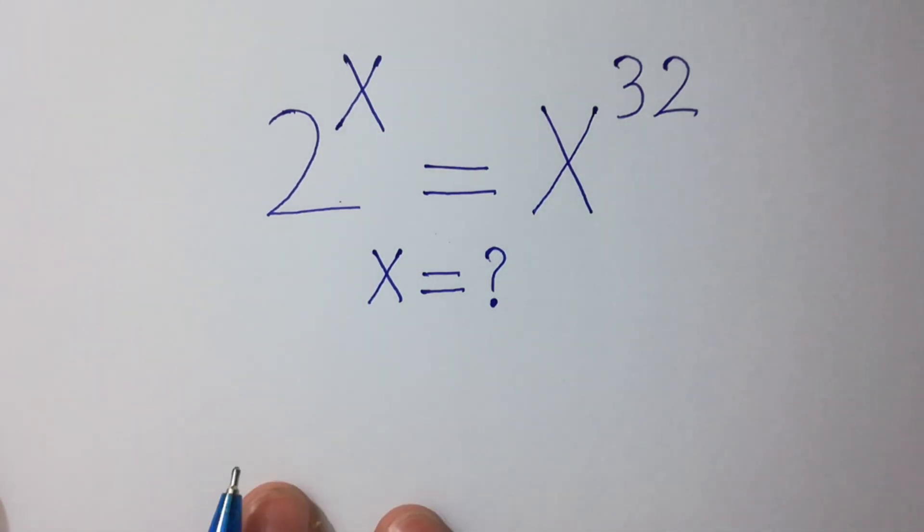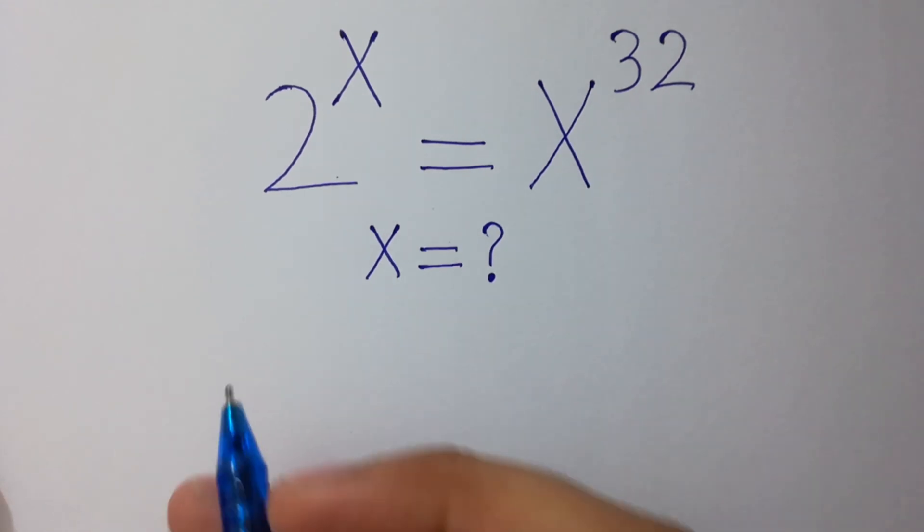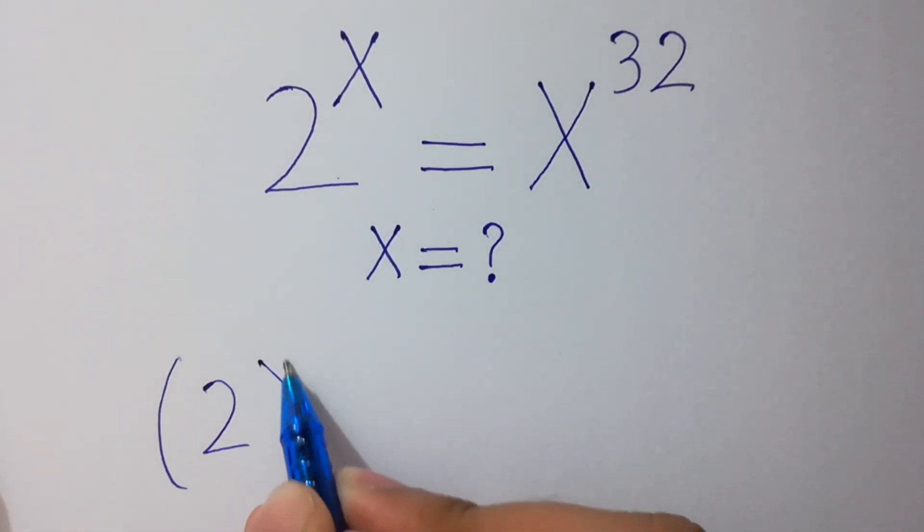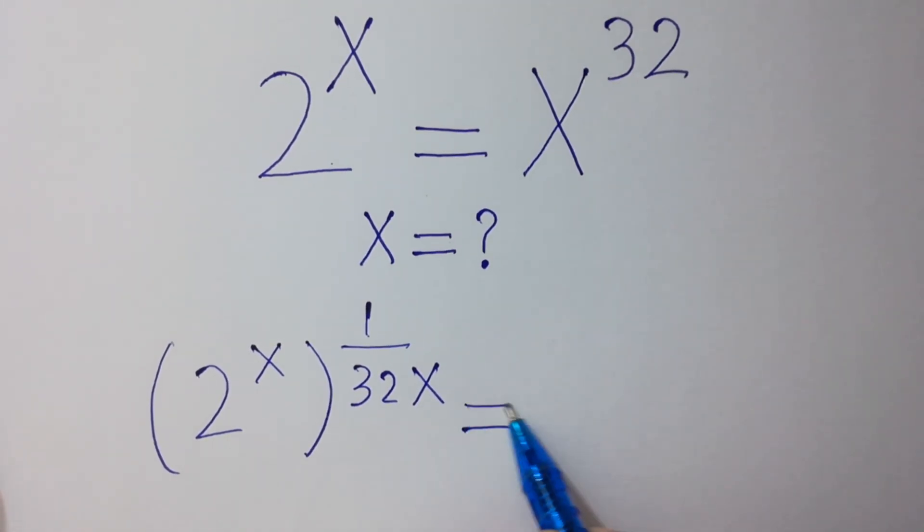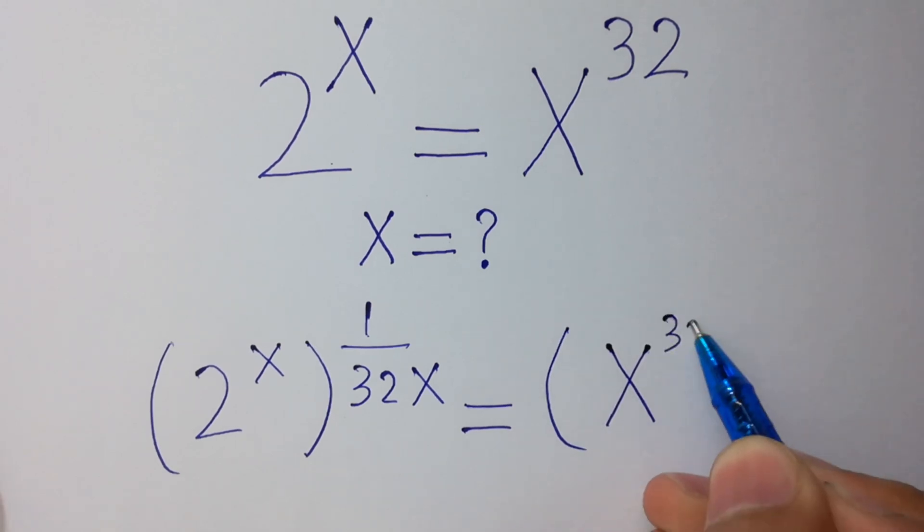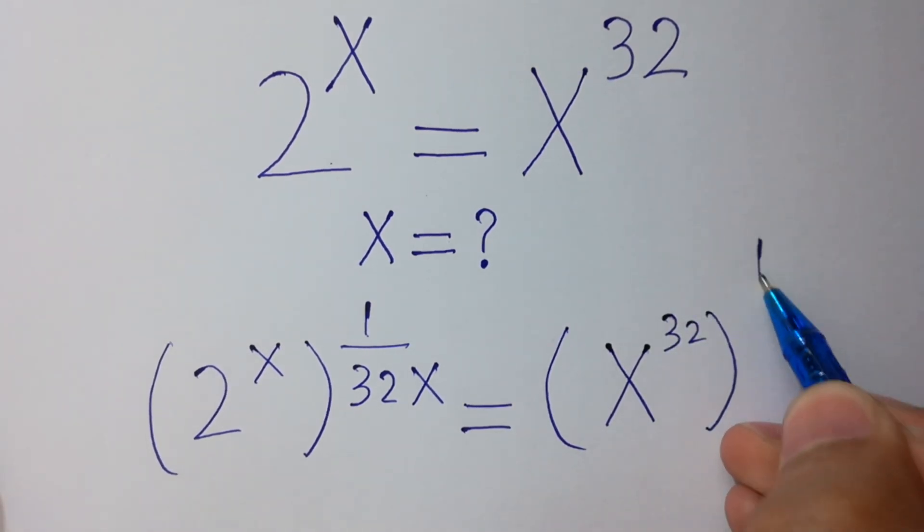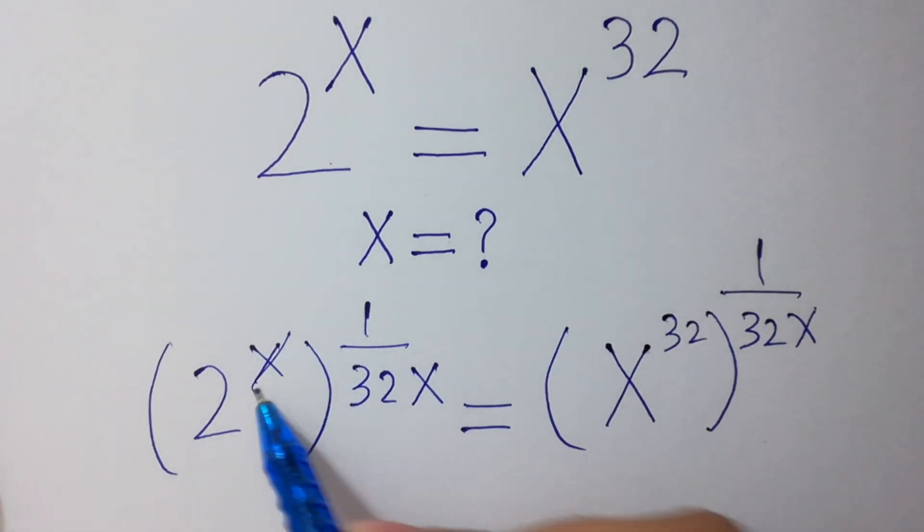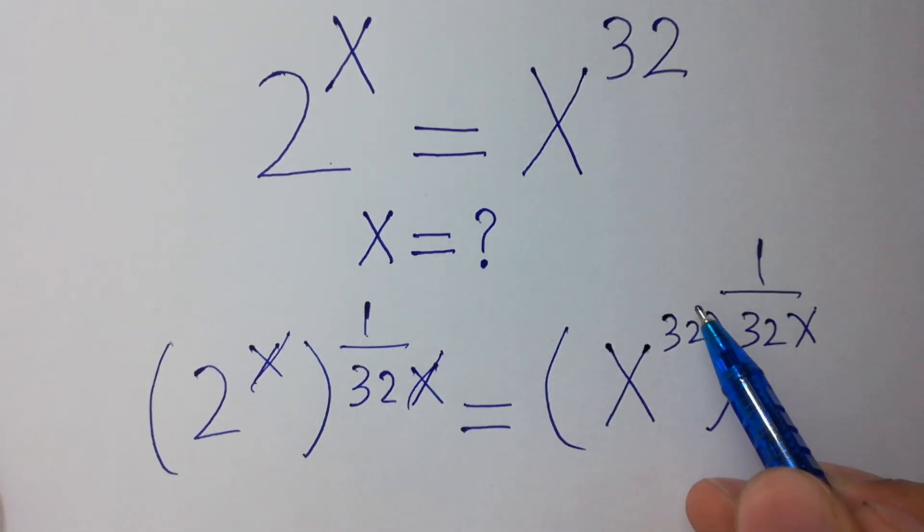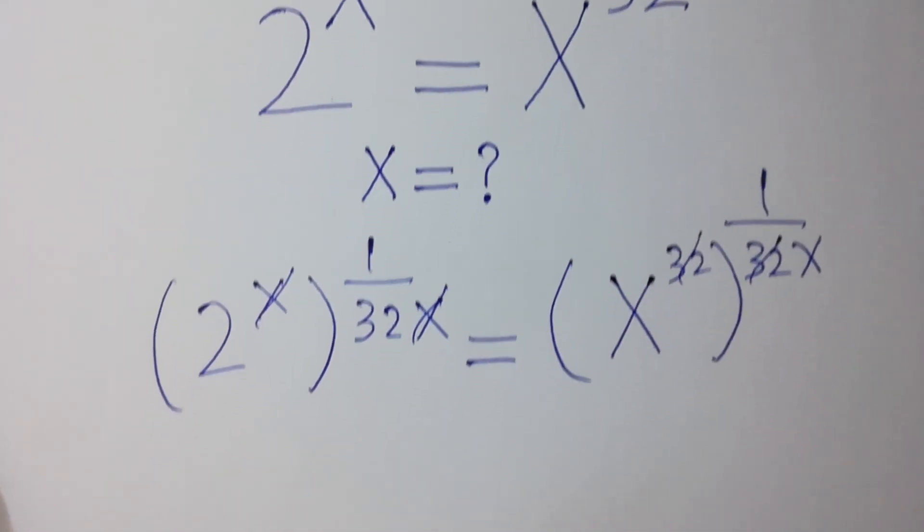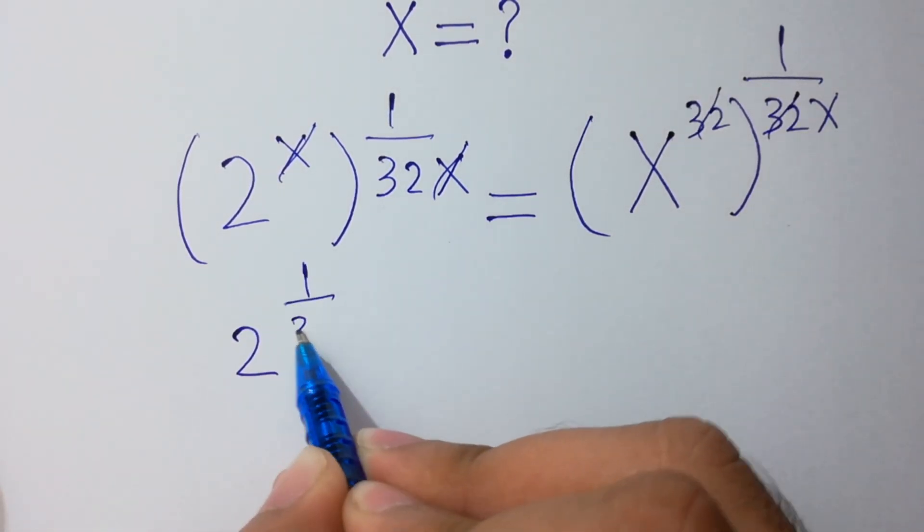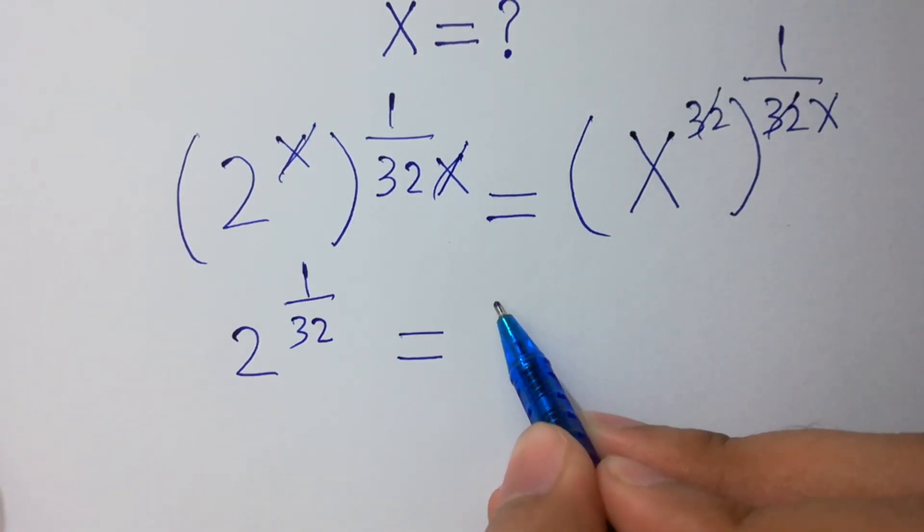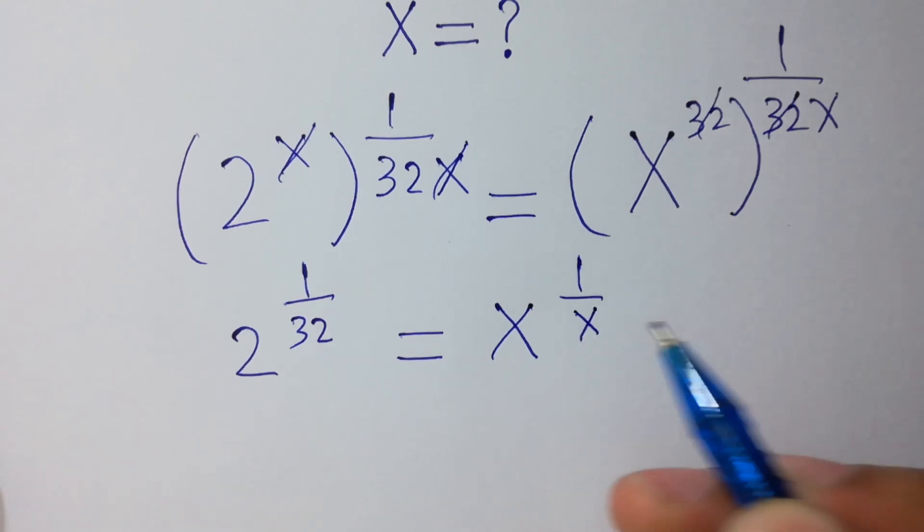Let's solve it. First of all take 1 over 32x on both sides. x and x will be cancelled and here 32 and 32 will be cancelled. So we have 2 to the power 1 over 32 equals to x to the power 1 over x. Clear?